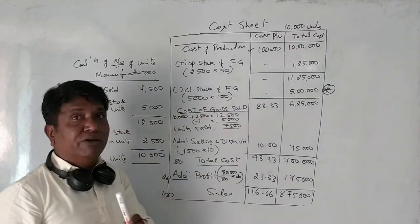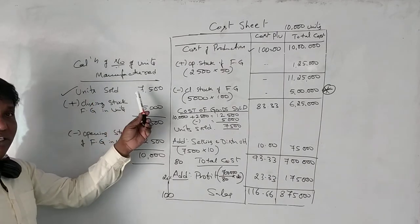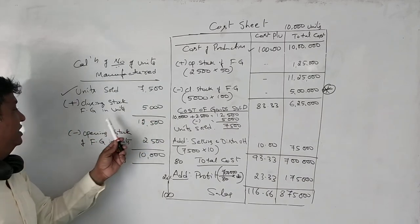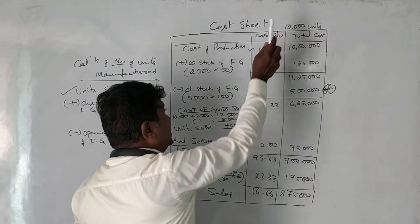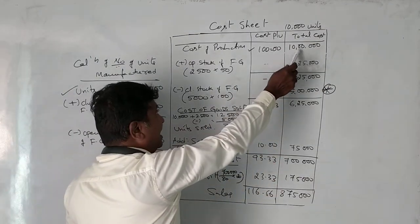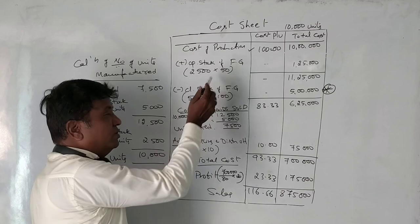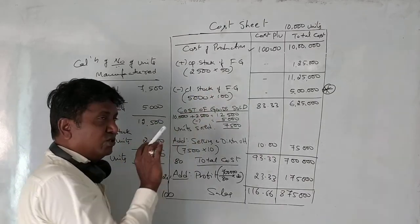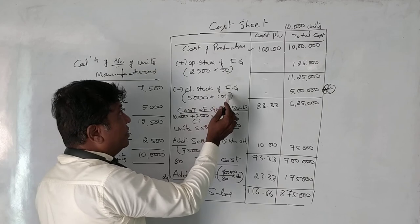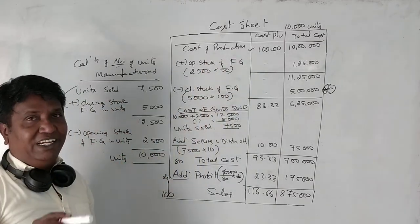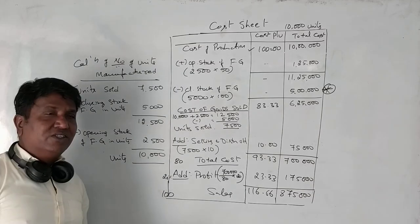To calculate cost of production per unit, you must know the number of units manufactured. To calculate units manufactured: take units sold, add closing stock of finished goods, minus opening stock of finished goods — this gives units manufactured. If units manufactured is 10,000 and cost of production is 10 lakhs, per unit cost is 100 rupees. Opening stock per unit is given as 50 rupees, but closing stock per unit is not given — always calculate closing stock of finished goods per unit based on cost of production only.